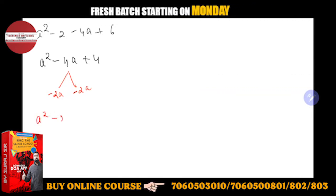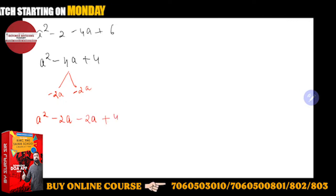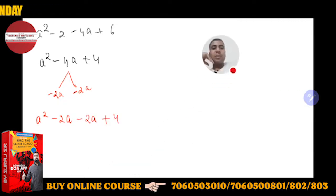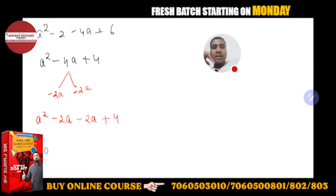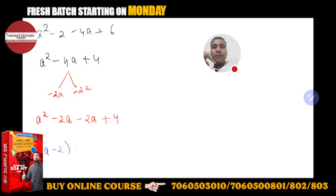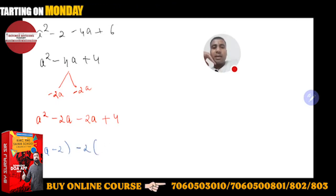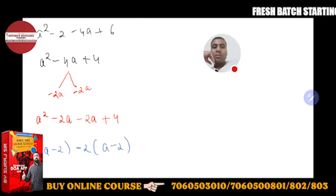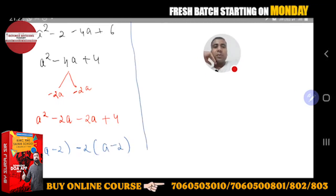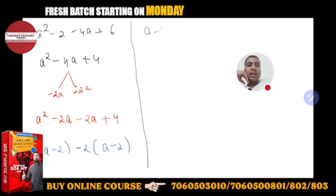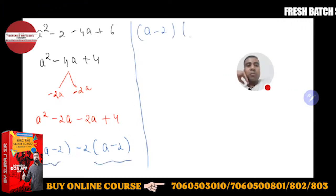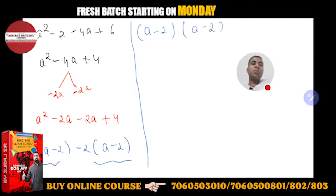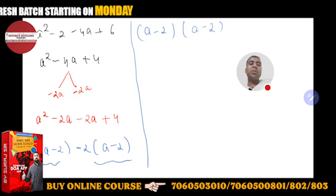Toh yeh equation aise ho jaayegi: a square minus 2a, again minus 2a plus 4. So if you will solve this — you have to take common. If you will take a common from here, toh yahan par a minus 2 will come. And if you will take minus 2 common, again a minus 2 will come. So a minus 2 into a minus 2. Toh aapke factors kya bange — a minus 2, a minus 2. You can write it as a minus 2 ka whole square, or a minus 2 into a minus 2.